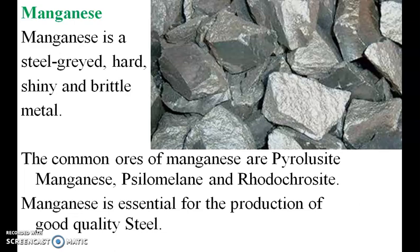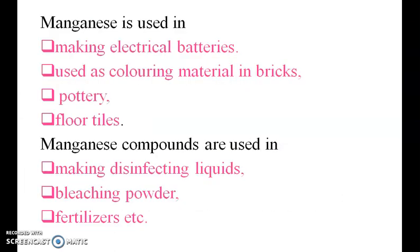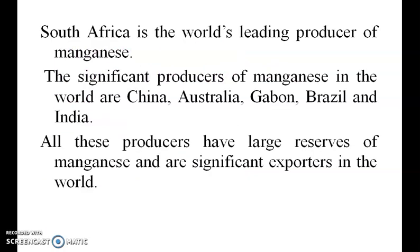Manganese is a steel-grey, hard, shiny and brittle metal. The common ores of manganese are pyrolusite, manganite, psilomelane and rhodochrosite. It is used in making electric batteries, coloring material in bricks, pottery and floor tiles, and also in making bleaching powder and fertilizers. South Africa is the world's leading producer of manganese. The significant producers of manganese in the world are China, Australia, Brazil and India.